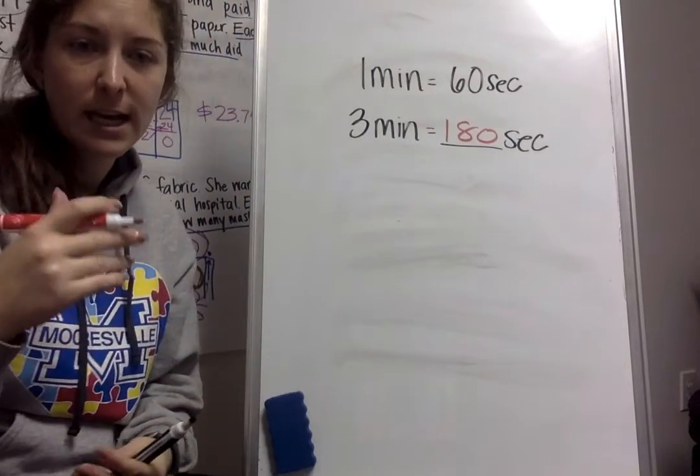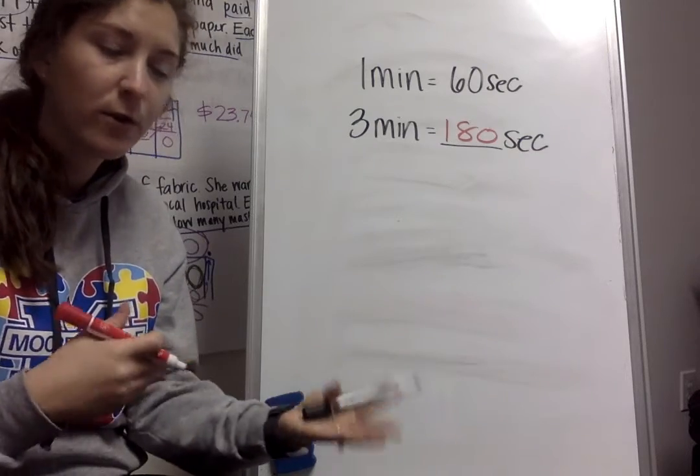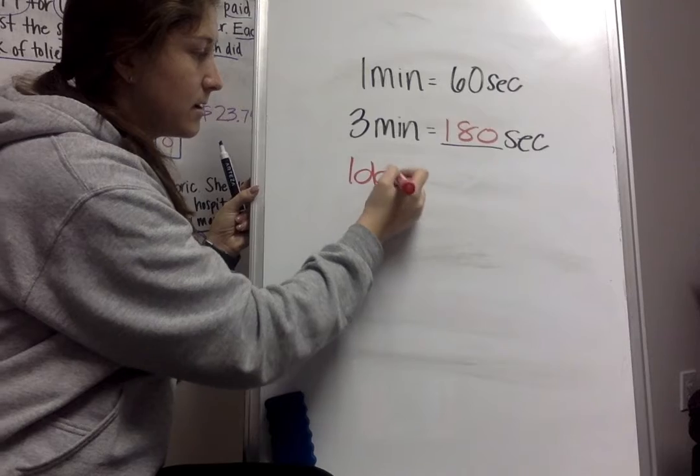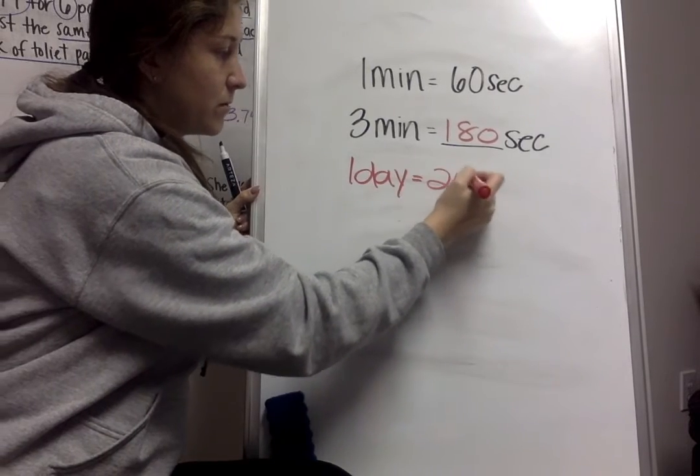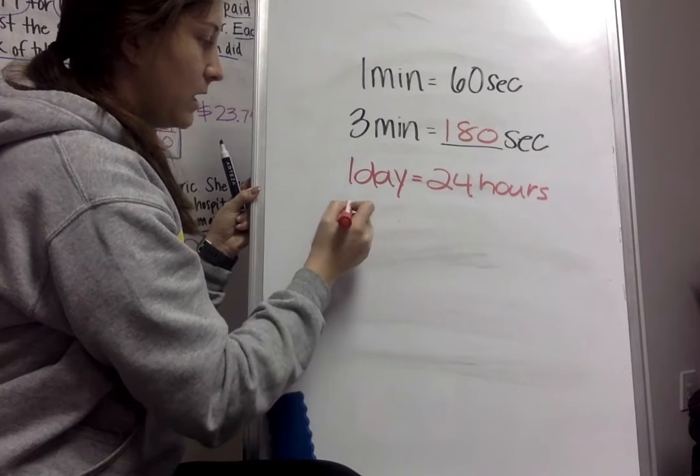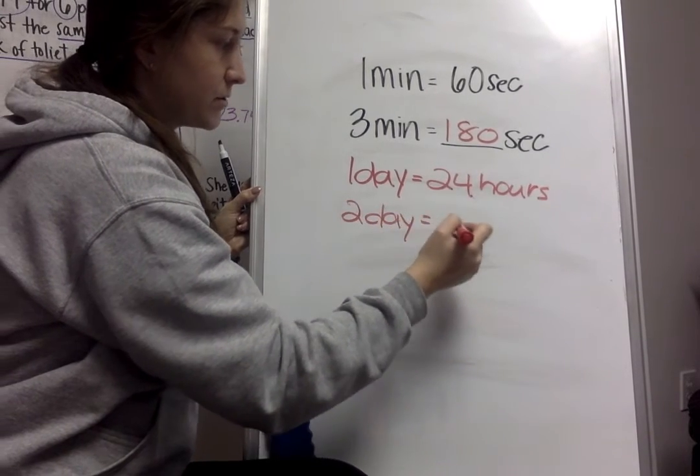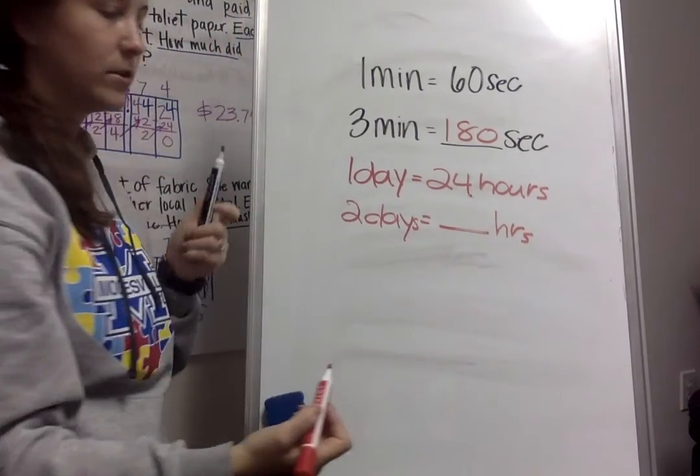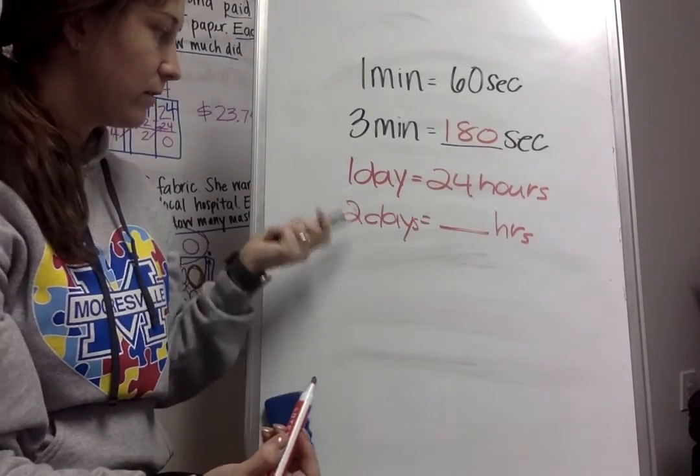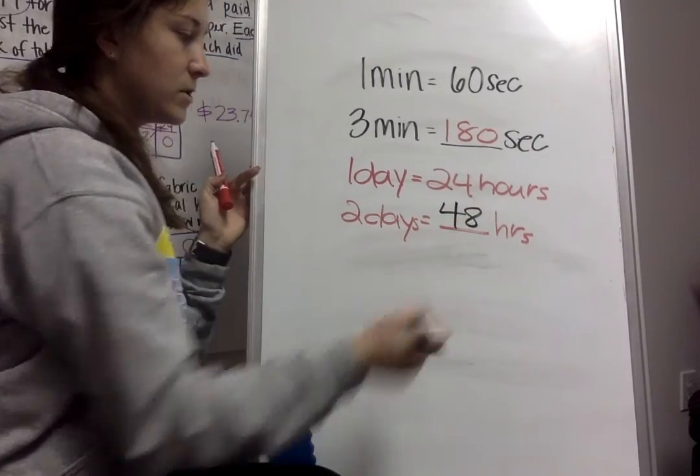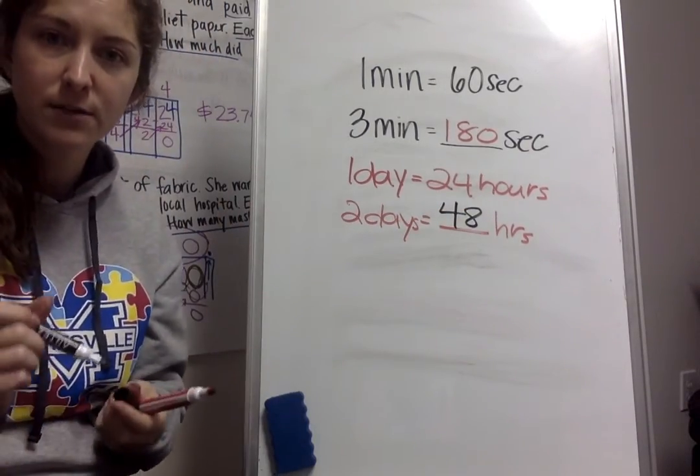And you guys can figure out things like how many, if there's 24 hours in one day. One day equals 24 hours. In two days, how many hours would that be? So what would I have to do there? I'd have to do 24 times two. So I know that 24 times two is 48. So two days, you have 48 hours, different things like that.